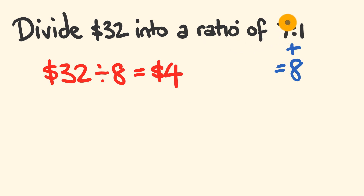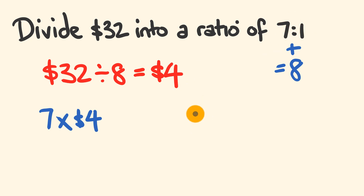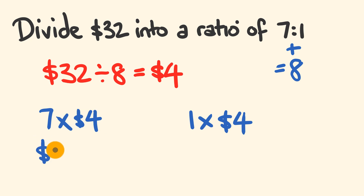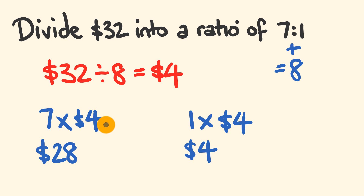So where do we go from here? We know that one person is getting 7 parts, so they're getting 7 times $4, and the other person is getting one part, so they're just getting 1 times $4. So what does each person get? 7 fours is $28 and 1 times 4 is $4. The question's been answered and you can check it by adding these together: 28 plus 4 is equal to 32. So that's the first tip on how to do these.